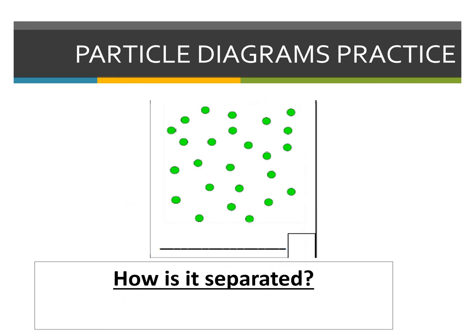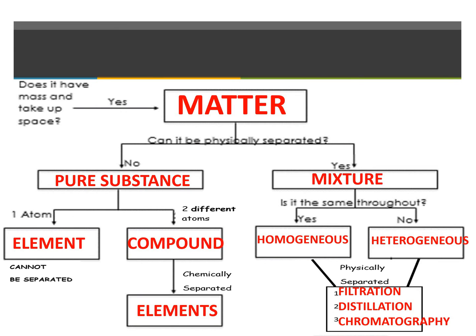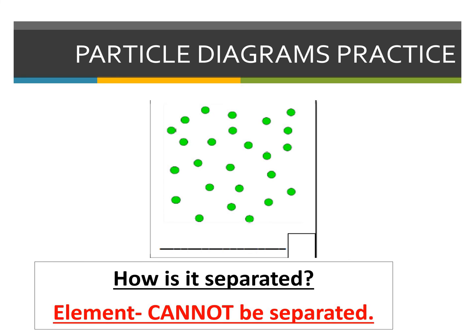Now we're going to move on to classifying particle diagrams in our packet. Let's look at the first image. If we look at these items, there is one type of particle. Since it's one type of particle, it's a pure substance. If I have one type of atom, I'm going to be an element. We only have one type of atom, so this is going to be considered an element. And can it be separated? Looking at our flow chart, it says no — it cannot be separated. So this particle diagram represents an element, and it cannot be separated.